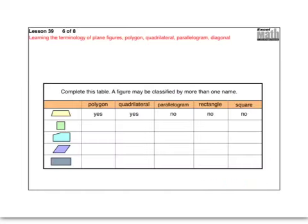This last diagram, you're going to write yes or no — just write Y or N on each shape. For the first shape: is it a polygon? Yes. Is it a quadrilateral? Yes, it has four sides. Is it a parallelogram? No, because one pair of sides is parallel but the other is not. Is it a rectangle? No, it does not have four right angles. Is it a square? No. The tricky one is the rectangle because squares can be rectangles.